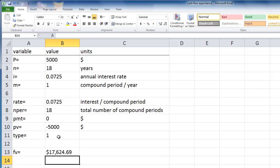Your answer will appear in dollars. The initial investment will be worth $17,624 after 18 years of 7.25% interest. Now that the basics of Excel's financial functions have been presented, let's move on to a more complex example about paying back loans.